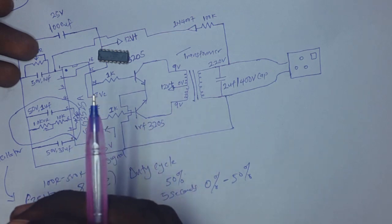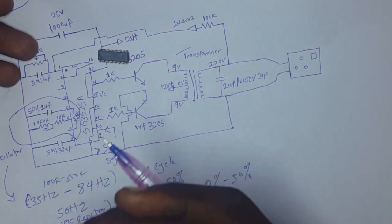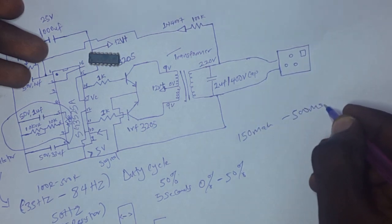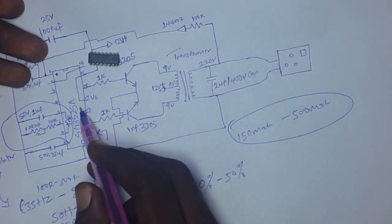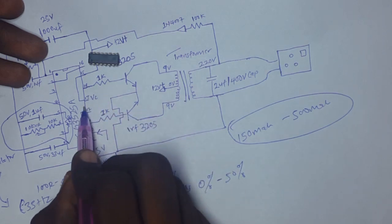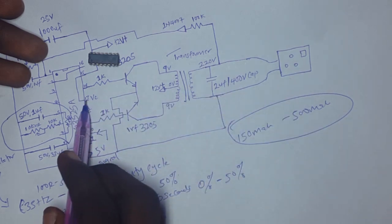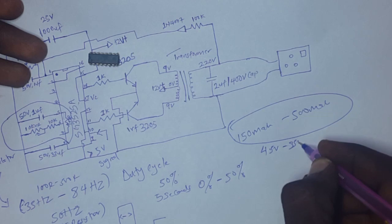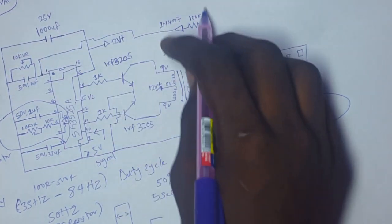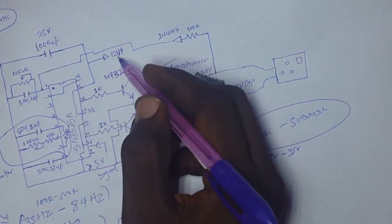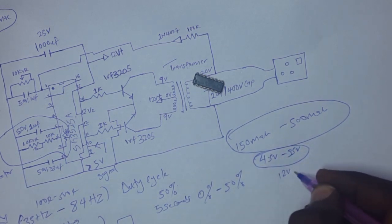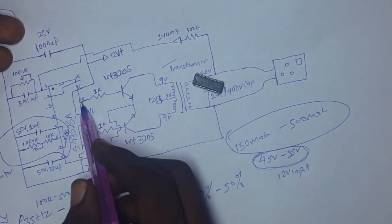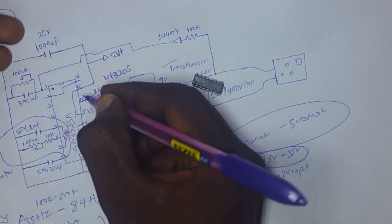This IC has its own internal transistor that amplifies the output signal, but it can only handle a load of 150mA to 500mA. Pin 13 is the leg that connects to and turns on that internal transistor. It needs an input voltage of 4.5V to 35V maximum. Since our inverter input is 12V, it falls within that range, so it is fine to connect to pin 15.